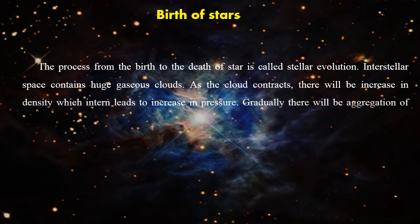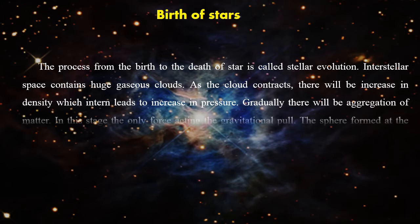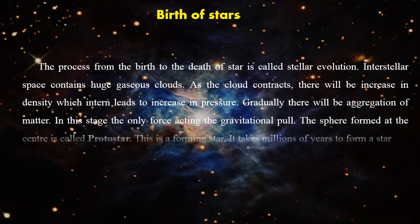The increase in density in turn leads to an increase in pressure. Gradually, there will be aggregation of matter. In this stage, the only force acting is the gravitational pull. The sphere formed at the center is called a proto-star. This is a forming star, and it takes millions of years to form a star.